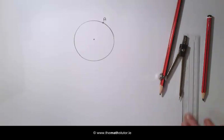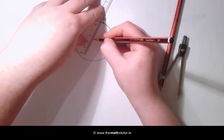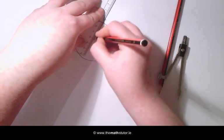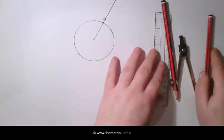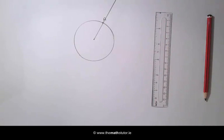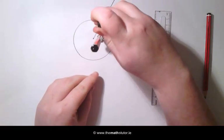The first thing we are going to do is draw a line from the center through the point A. We are then going to construct a line perpendicular to this line through the point A. So we place our compass on A and draw an arc on either side.